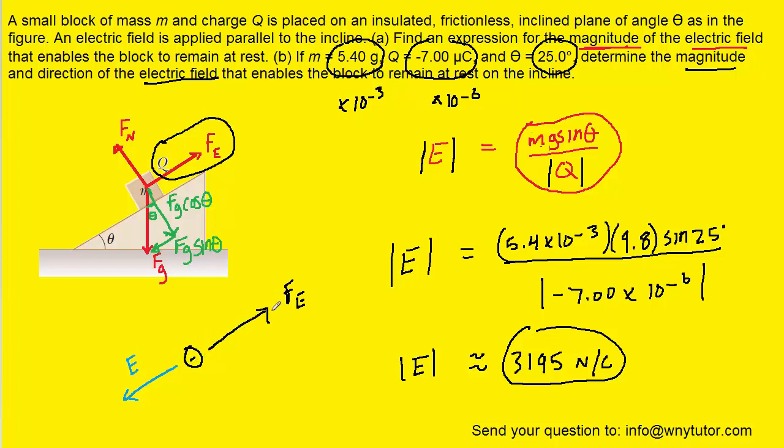Since the electric force is pointing up the ramp, the electric field must be pointing down the ramp. So the direction for the electric field is down the ramp, and that completes the answer to part B.